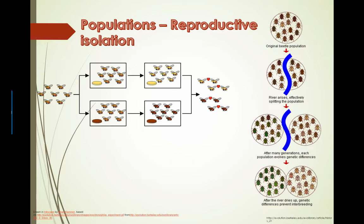If food sources start to change, you can end up creating isolation in that sense. The idea here is that over many generations, eventually these groups that have been separated by whatever factor may no longer be able to interact and actually reproduce with each other, even if they are genetically fit.